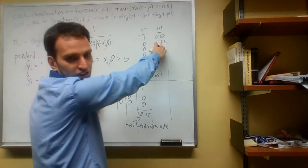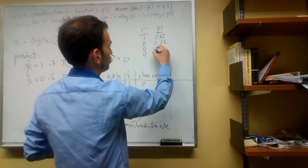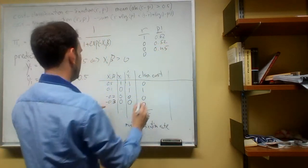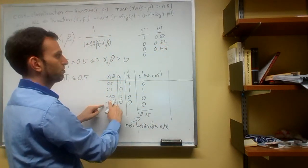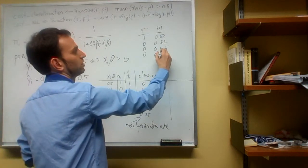This guy is the logistic of this, which works out to 0.45. And if you compute the logistic of minus 0.3, you get 0.42.